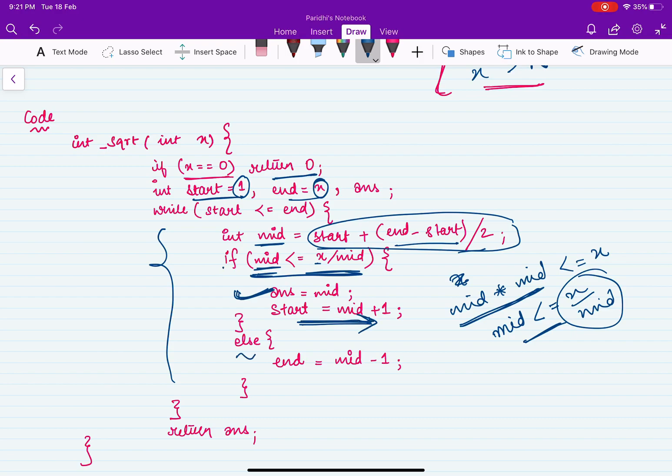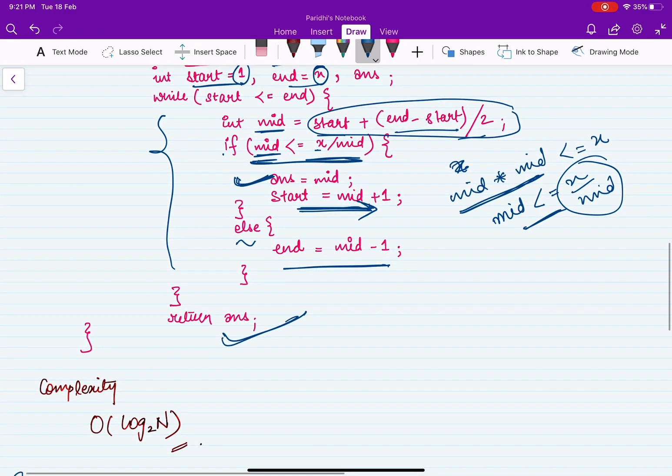Else, if this condition fails, then we will move to our left. Then we will simply return our answer. Now this particular binary search approach is going to take the complexity of order of log base 2 n.